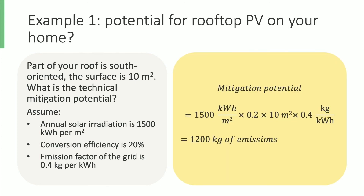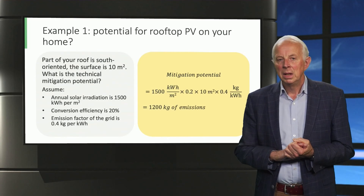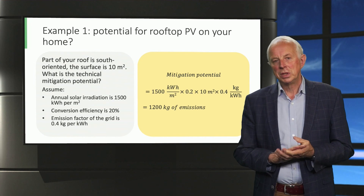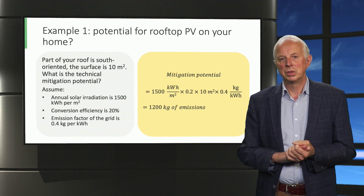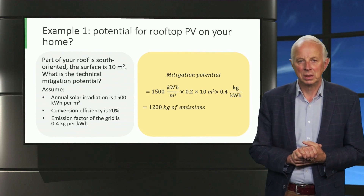You can calculate the mitigation potential by multiplying these numbers to obtain 1200 kg of emissions. These are the emissions from the grid avoided by the maximum application of solar energy on your roof.